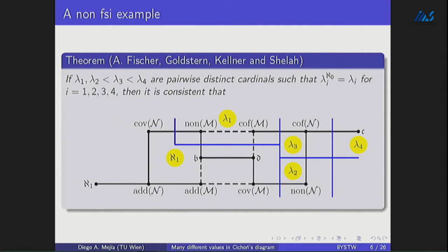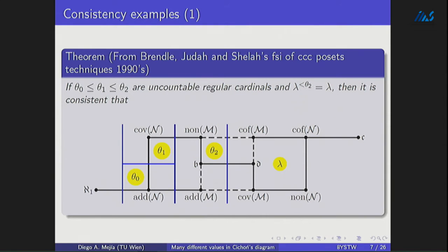With finite support iteration, it is very easy to separate on the left-hand side. For example, using techniques from Brendle, Judah, and Shelah, we can separate the diagram very thoroughly on the left-hand side. I'm going to introduce some theory, especially about preservation properties, and explain how to obtain this consistency result and use the same theory to get some other results — particularly separating on the right-hand side, which is the real challenge in this framework.